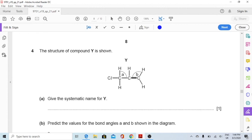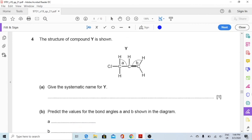In this video, I'll be solving question 4 onwards of May June 2019 paper 2 variant 1 of chemistry. Question number 4, the structure of compound Y is shown. Part a, give the systematic name for Y. Giving names to these structures is very easy when you have just one functional group present.